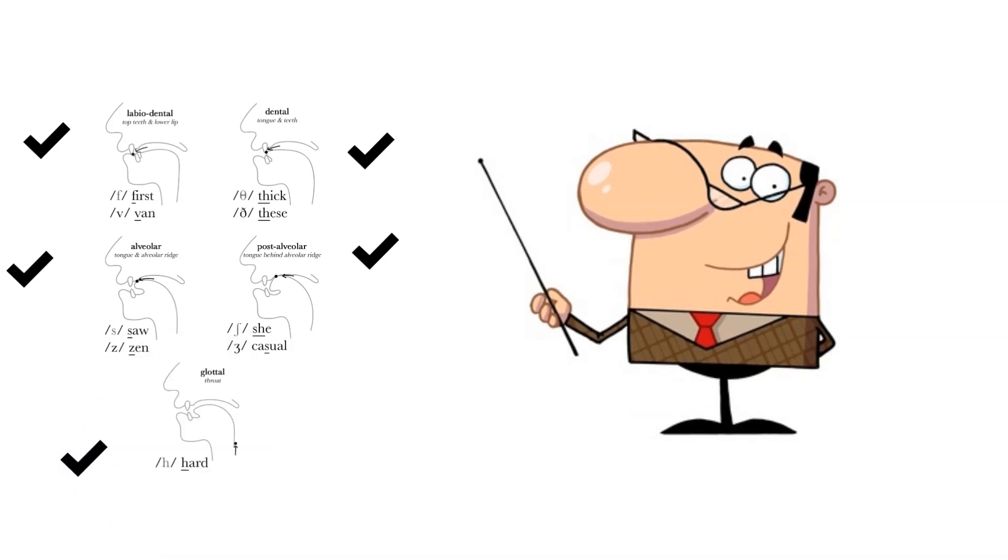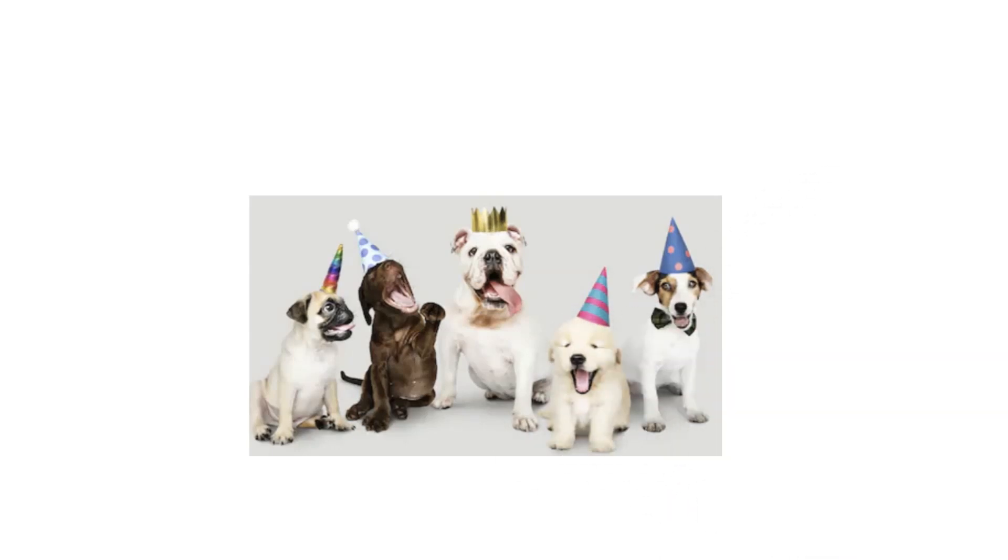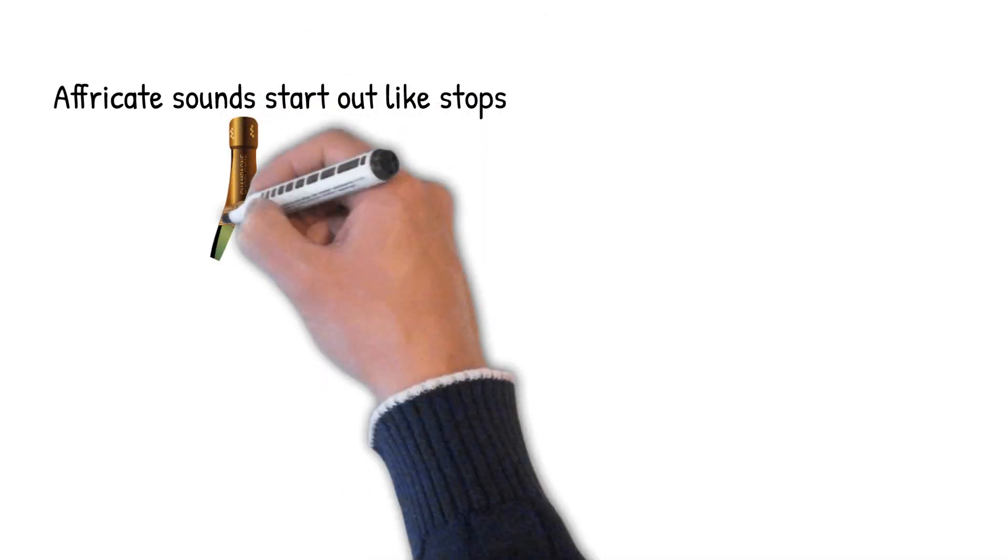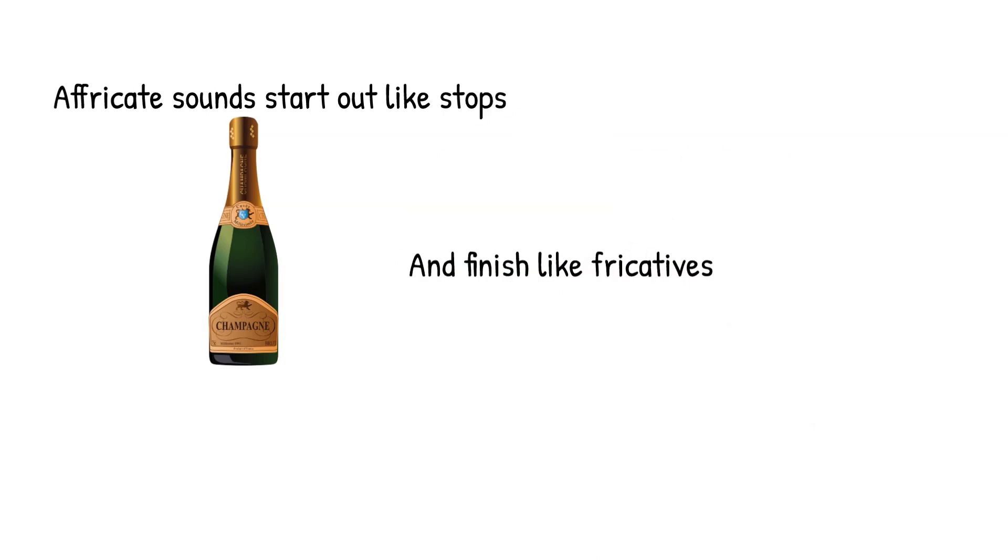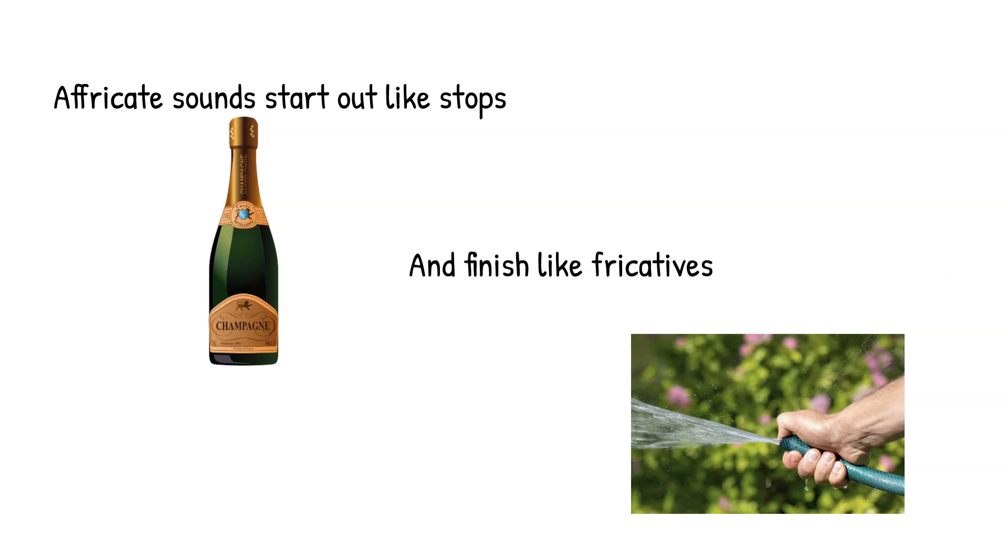And the palatal alveolars or post-alveolars are SH and ZH. And finally, the glottal fricative, as we've said, is H as in 'hard' or 'a head.' You might be happy to hear that there's only one more manner of articulation that we need to cover in this presentation. The third manner of articulation that we're going to cover here is for sounds that we call affricates. And if you understand stops and you understand fricatives, guess what? You understand affricates, because an affricate sound is essentially a consonant that starts out as if it's going to be a stop and then finishes as if it were a fricative.